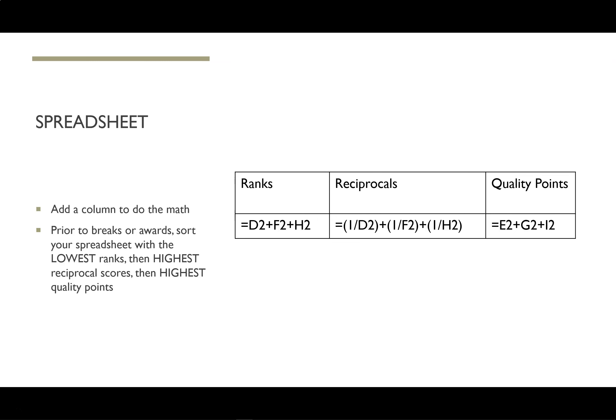If you are using a spreadsheet, simply add a third column to your results where you have the ranks and the quality points. In between those, add a reciprocals formula. For example, if you have your ranks in columns D, F, and H, and quality points in columns E, G, and I, this is an example of a simple formula that would likely do the job. You would then rank by the lowest ranks, then the highest reciprocal scores, then the highest quality points, or use a more advanced spreadsheet that already does that ranking work for you.